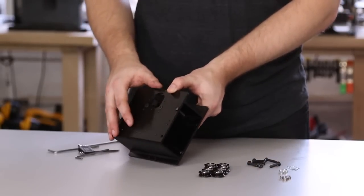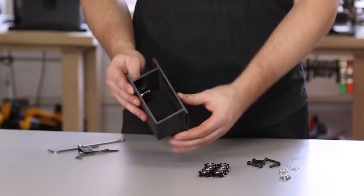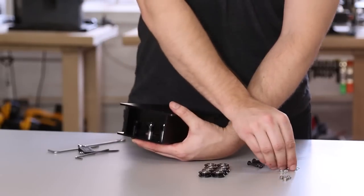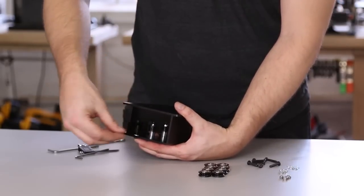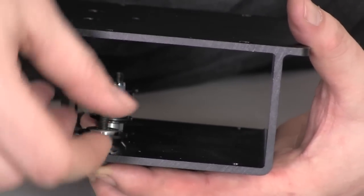We'll start by putting the top V-wheels on. First, put a screw through the hole from the outside, then slide a washer on it, then a V-wheel, and finally a hex nut.